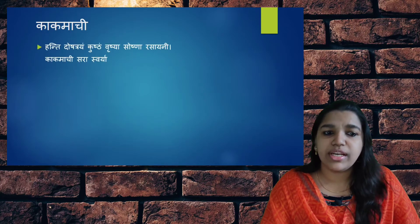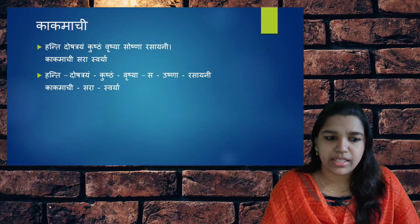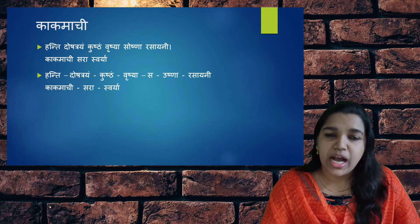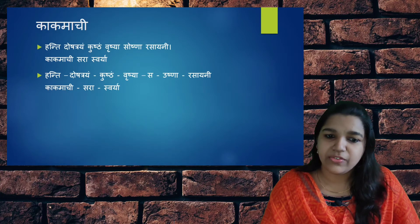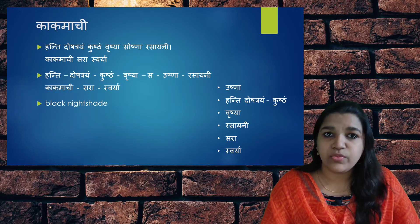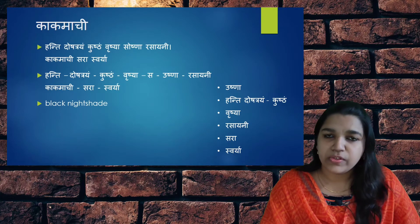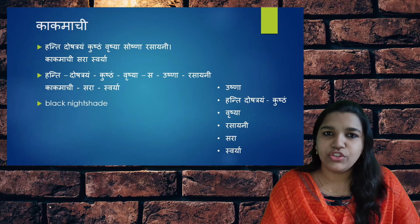Kakamachi — the properties of Kakamachi are: it is Ushna, that is Ushna Virya. It reduces the Tridoshas aggravations and also helps in conditions of skin disorders or Kushtha. It is Vrishya, it is Rasayani — that is anti-aging properties — it is Sara, that is laxative, and Swarya, it is good for the voice.